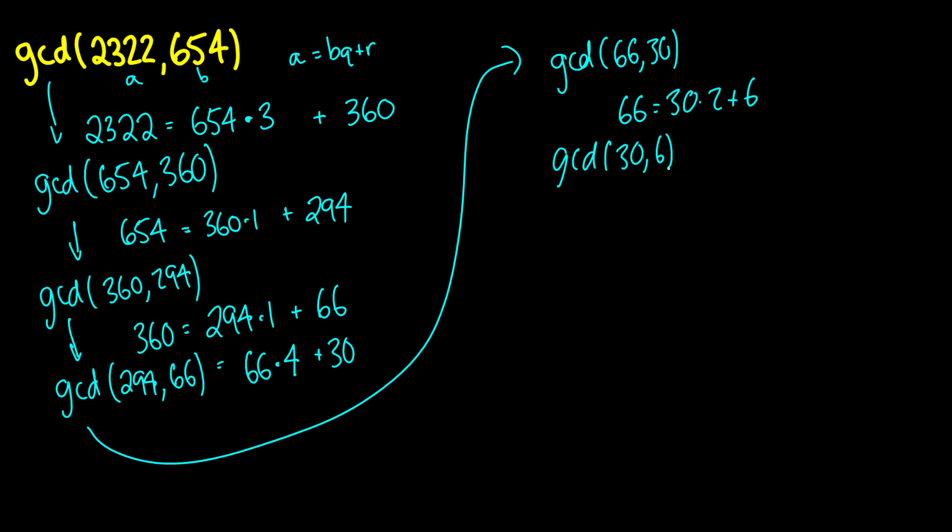So 66 is equal to 30 times 2 plus 6, which will be the GCD of 30 and 6, which should be really obvious that this is equal to 6. So the greatest common divisor of 2322 and 654 is 6, and that's crazy.